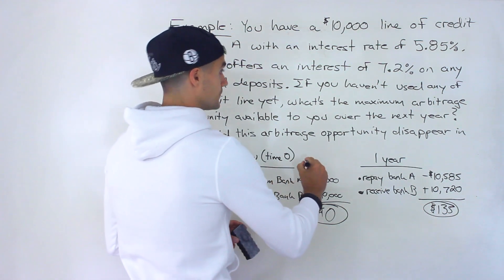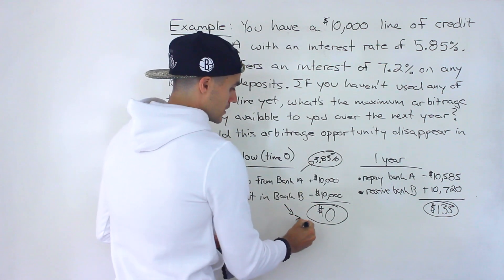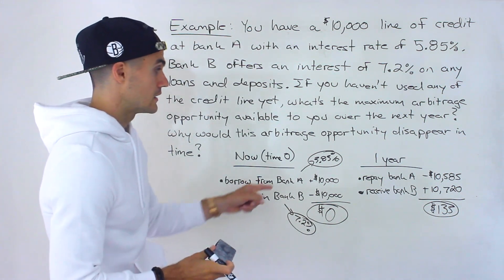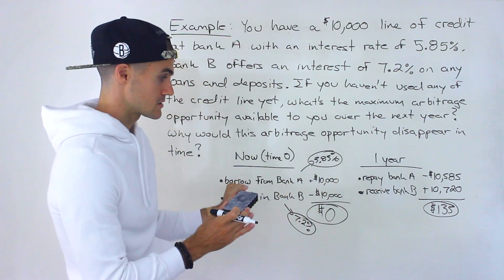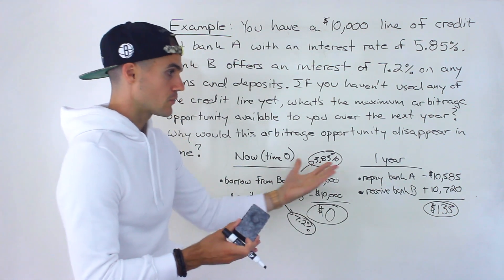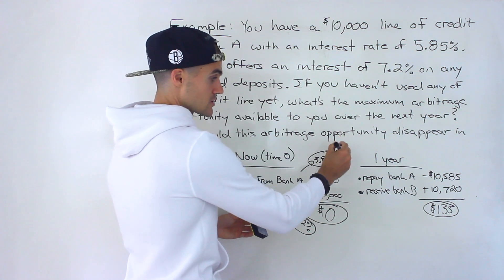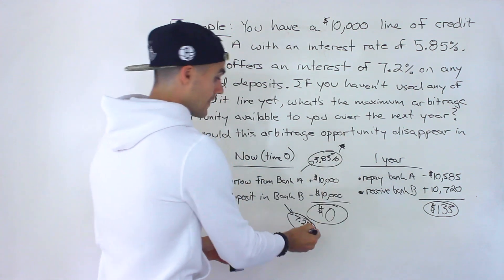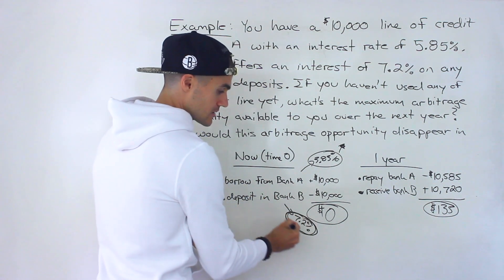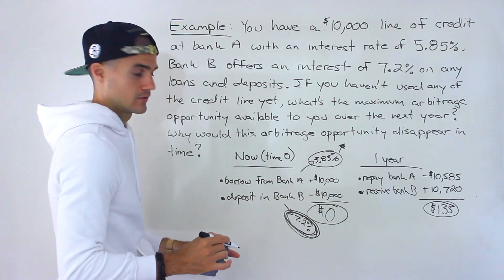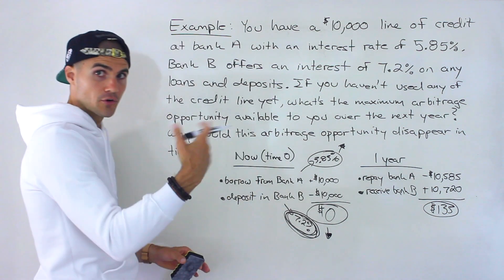Bank A has an interest rate of 5.85% and Bank B has 7.2%. What would happen is Bank A would notice a lot of people borrowing money from them — everyone would start doing this because it's a risk-free transaction. So Bank A would notice high demand and raise their interest rate. Meanwhile, Bank B would notice a lot of deposits coming in and realize they're paying a very high interest rate, so they would start lowering it as more and more deposits arrive.